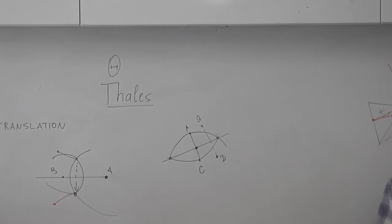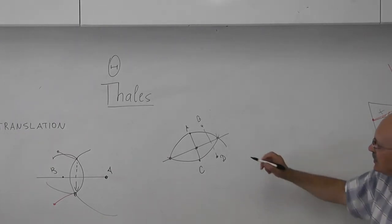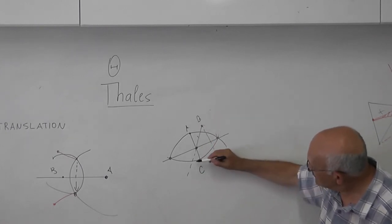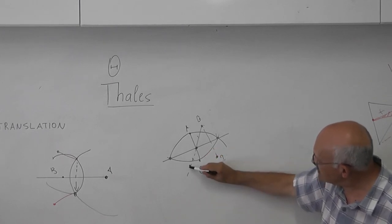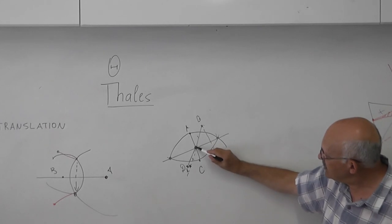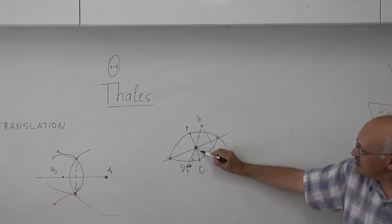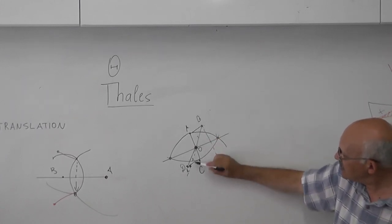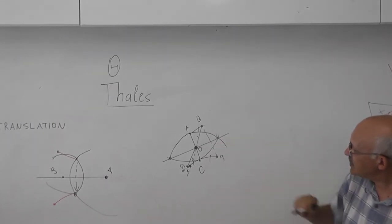Julia suggested a different solution. She decided to use rather than line reflection, she used the central reflection, reflection in a point. So we can draw the line and then mark equal segments. And this is another solution. Point B will be symmetric. Point D1 and B are symmetric about this midpoint of AC.